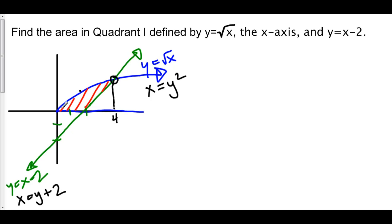Now we have to look at our limits of integration. We're going from y equals 0, which is the x-axis, up to where the two functions intersect. That occurred at x equals 4, and plugging 4 back in gives y equals the square root of 4, which is y equals 2. It also checks out for the other function: 4 minus 2 is 2. So we're integrating from 0 to 2 of (y plus 2) minus y squared, dy.